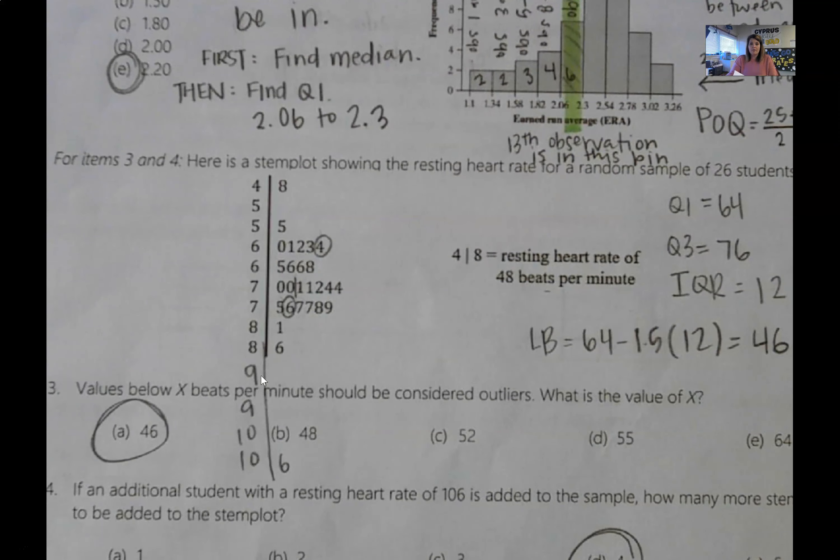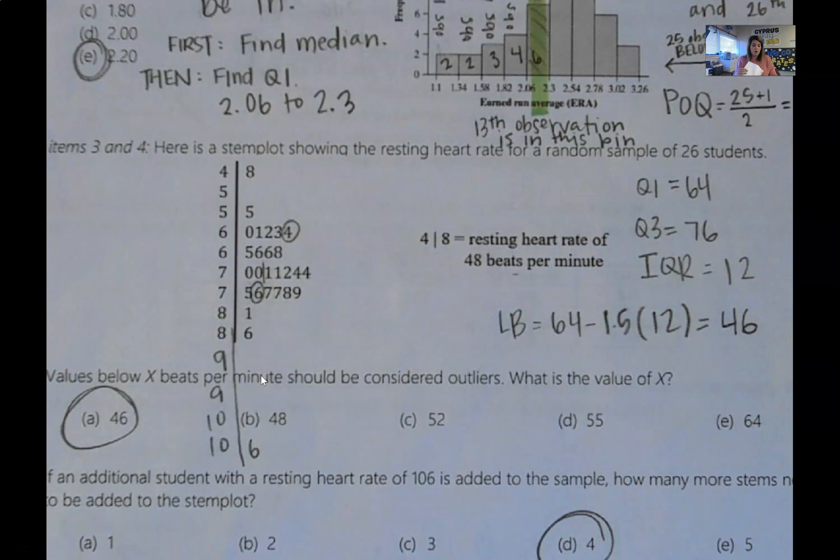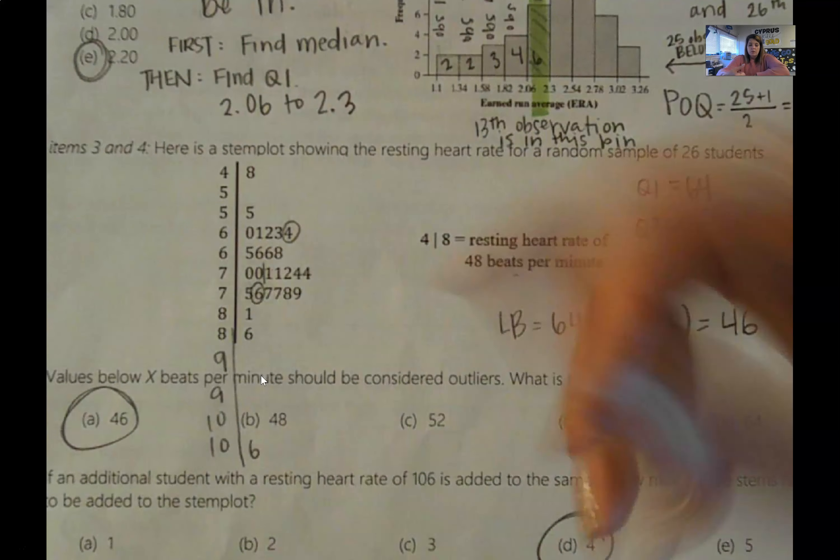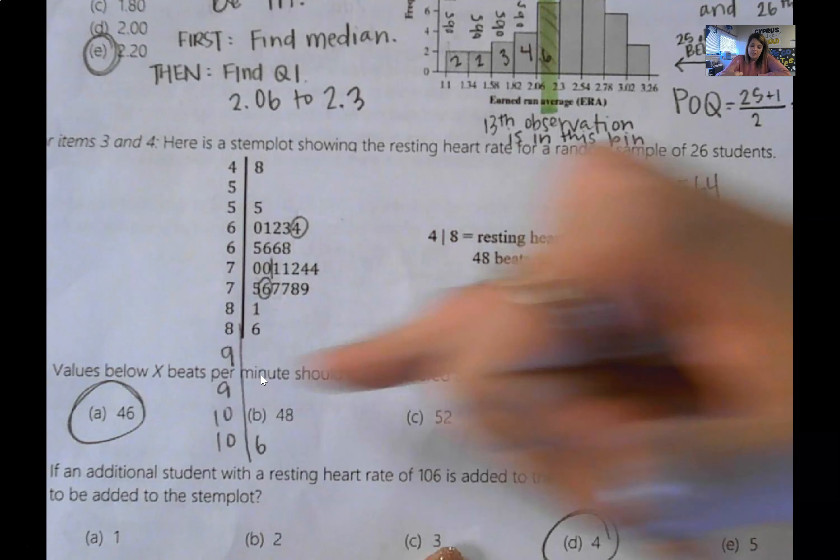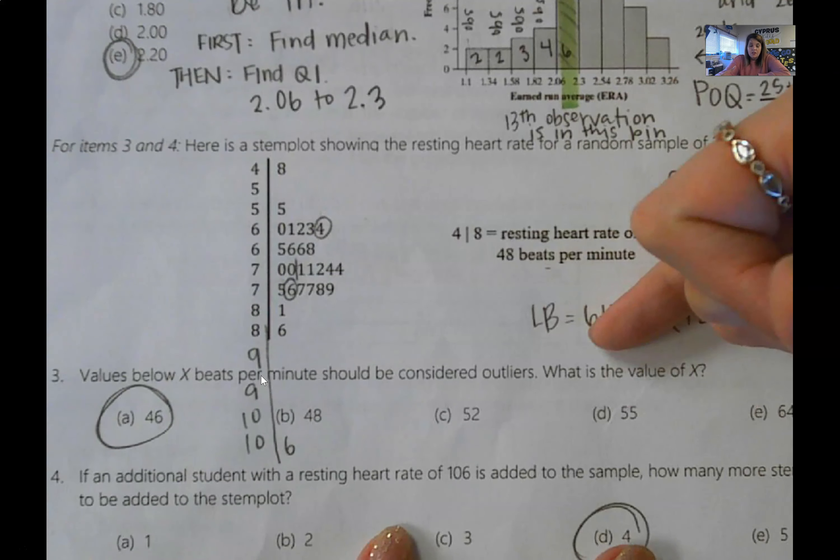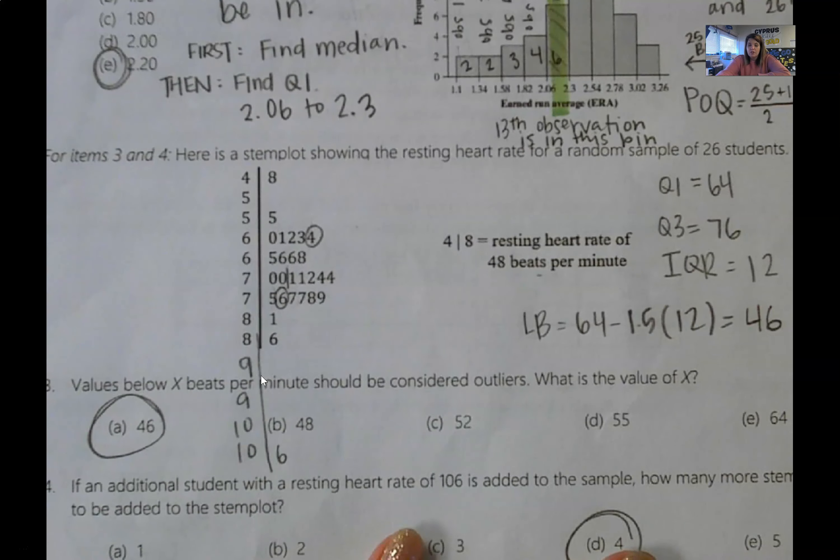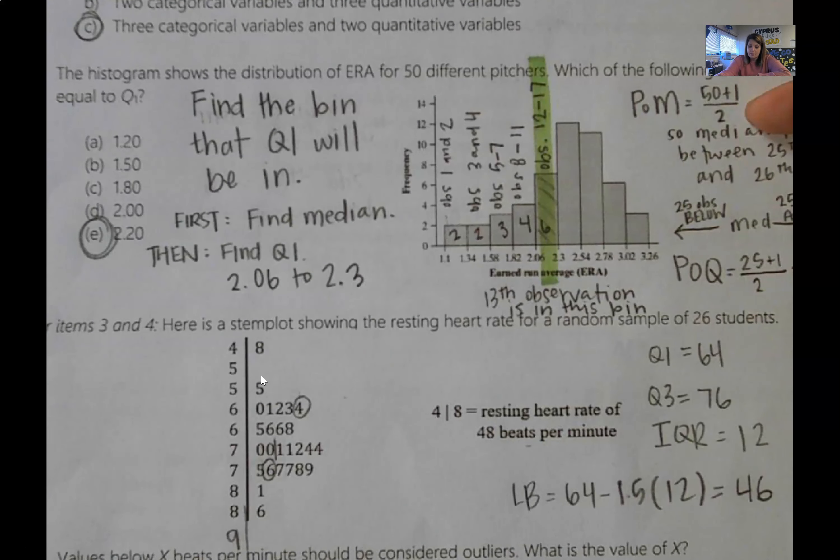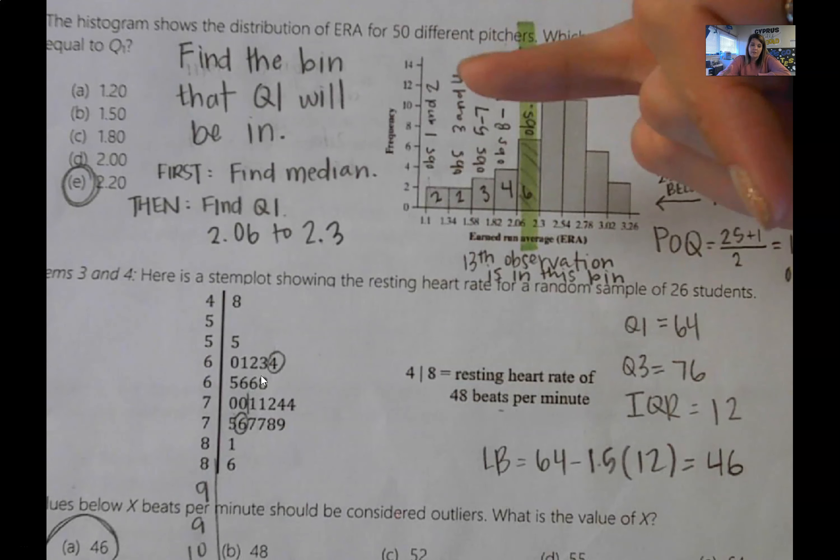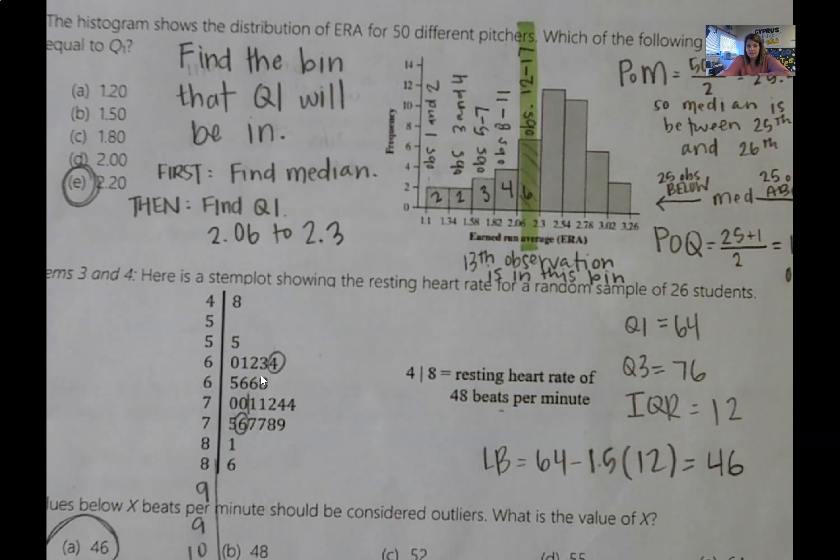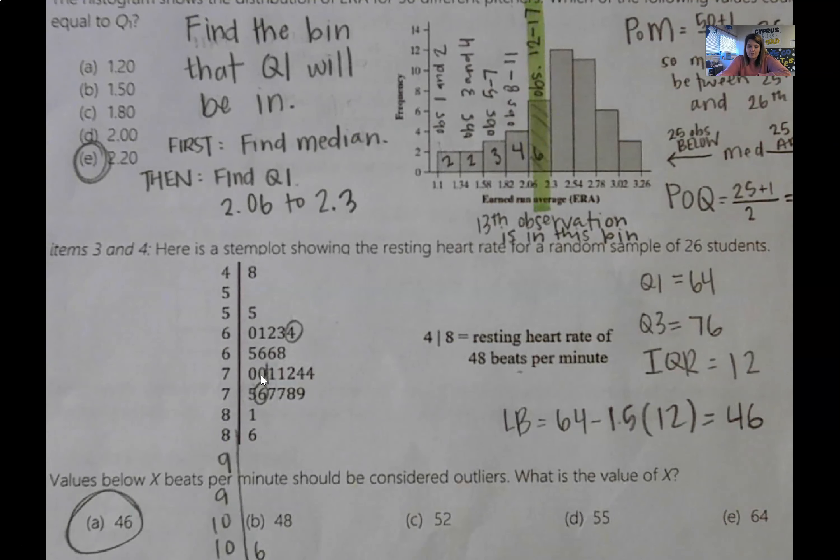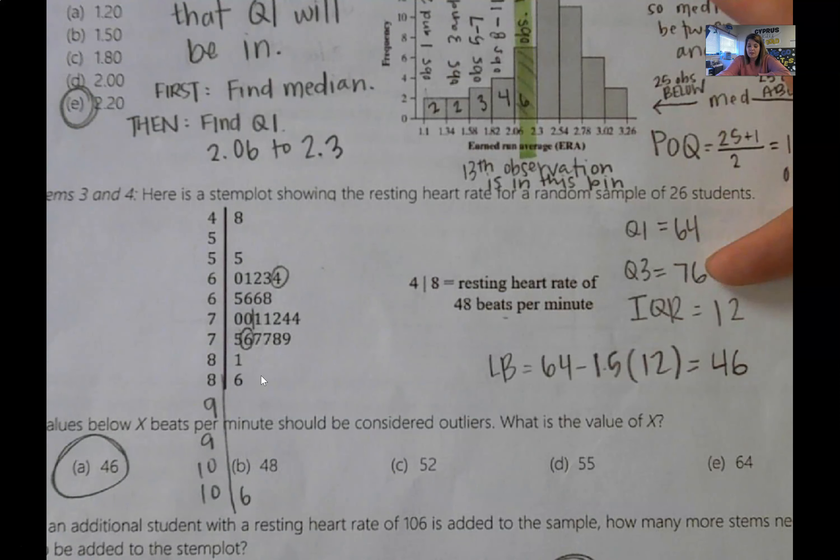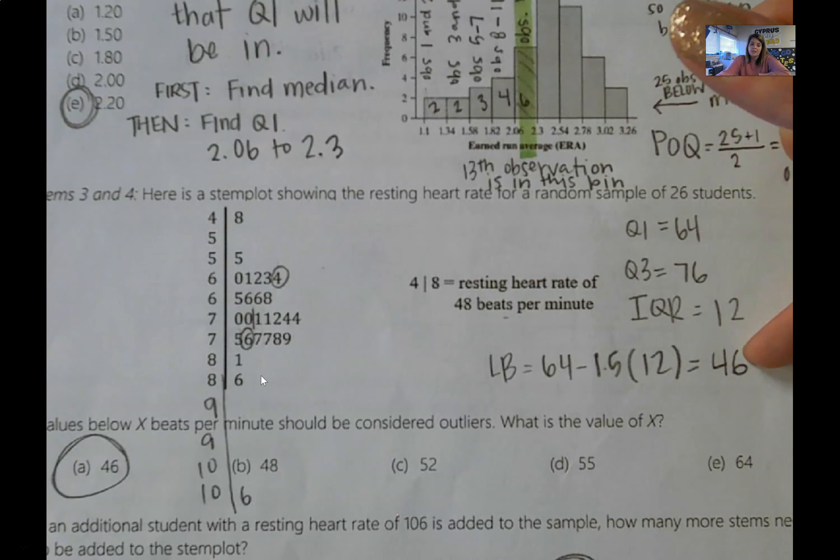Next up, we have a stem plot, and the first one wants you to identify what is the lower bound. Values below x should be considered outliers. What is the value of x? So you need to go through and find your median first, and then your quartiles. It is very similar to what I did here. So you find the position of your median, that ends up being between the 13th and 14th observation, which means that you have 13 observations to the left of the median and 13 observations to the right. So that means the position of your quartile is the seventh number from the median. So if you do it that way, you have that quartile one is 64, quartile three is 76, IQR is 12, your lower bound is 46. So it has to be A as in alpha.